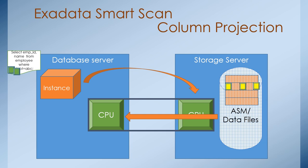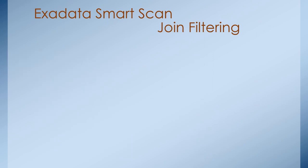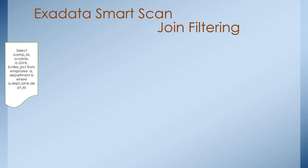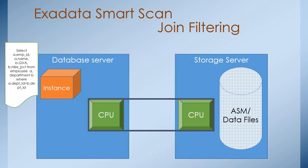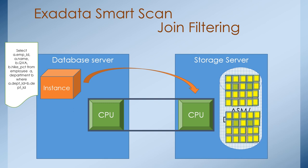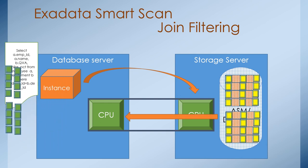You might ask: does smart scan work with a data warehouse environment which has complex table joins and filtering operations on huge tables? The Exadata smart scan works on join filtering as well, using the bloom filtering functionality enabled within the storage server. The entire SELECT statement passes through the storage server, which performs filtering and join operations internally within the storage servers. Only the output data is passed to the database, and the database passes it to the end user.